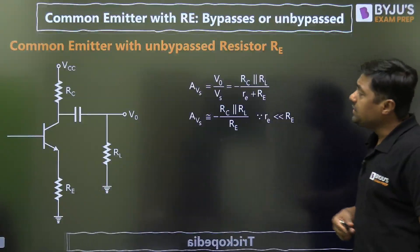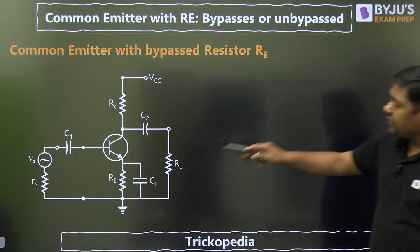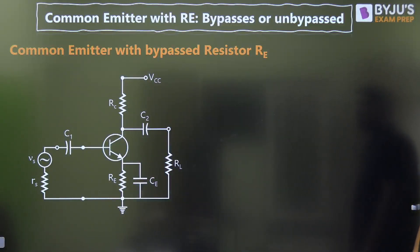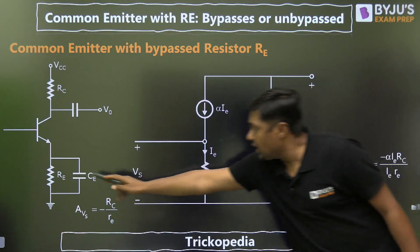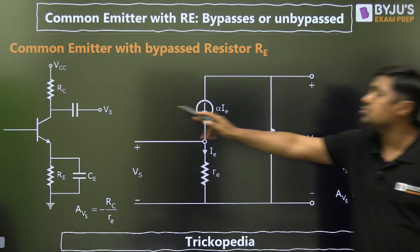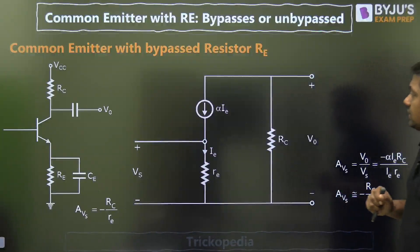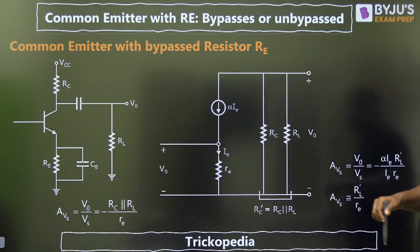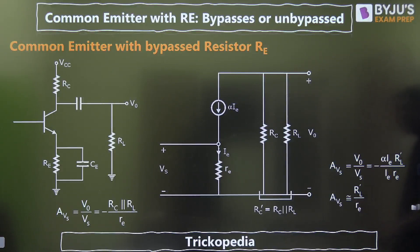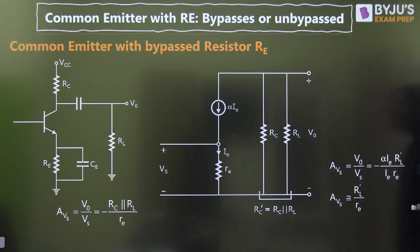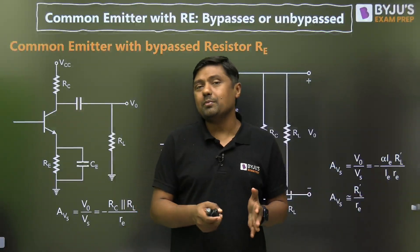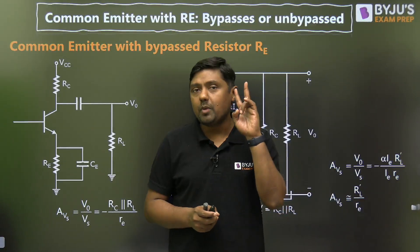So that is the answer for unbypassed RE. Now what is bypassed RE? In case of bypassed RE, if RE is bypassed by a capacitor C, then you simply remove the RE. Then watch this diagram — with RE removed, only small re is there. The formula is minus RC divided by small re. If RL is also given, you put RL in parallel with RC, so that changes to minus (RC parallel RL) divided by small re. There is a 180-degree phase shift. So this covers common emitter with bypassed RE and with unbypassed RE — you only have to remember two formulas.